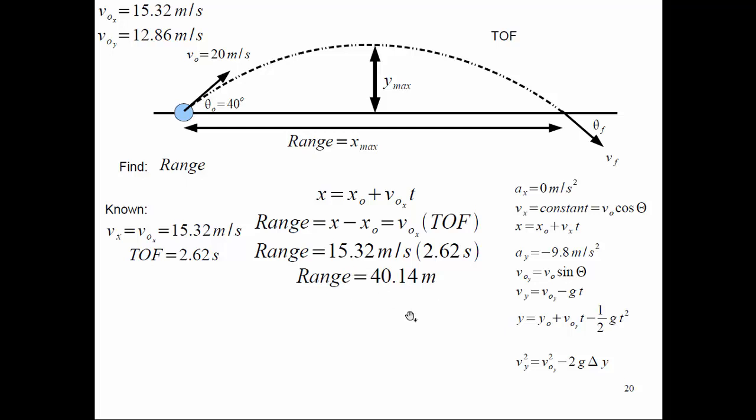We now know how high it went and how far away it landed, and how long it was in the air. The final thing to find is the final velocity and final angle. With a little physics background you may know the magnitude will be 20 meters per second and the angle will be negative 40 degrees — this has to do with energy conservation, which we'll cover in a couple of chapters.